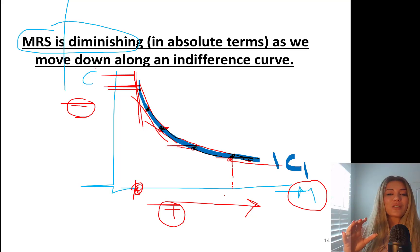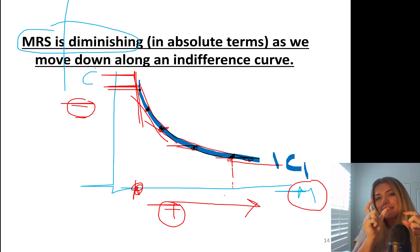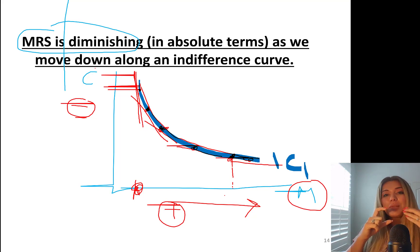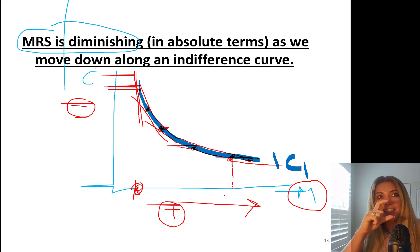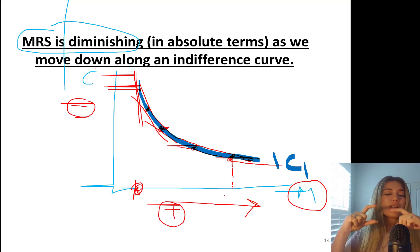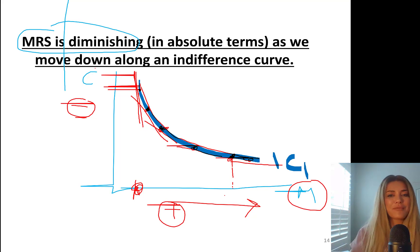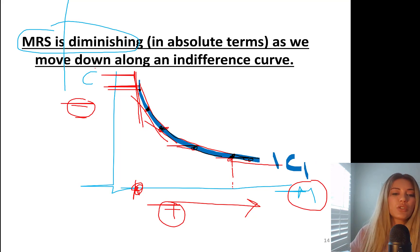For example, with diet Coke and pizza: if I've been eating pizza and I'm very thirsty, I might give up four slices of pizza for one more tiny cup of Coke. But as you drink more and more Coke, you're satisfied — you're not willing to give up four slices anymore, maybe just one or even half. As you consume more and more of something, you're satiated and willing to give up less of the other good to keep consuming one more unit.